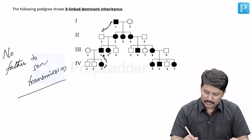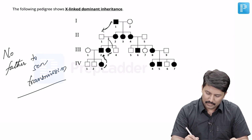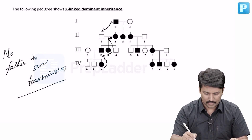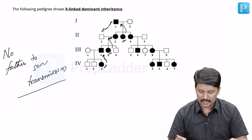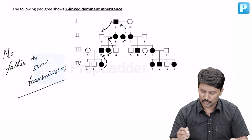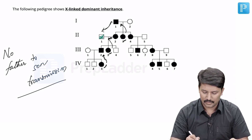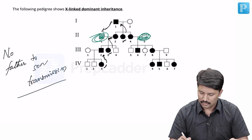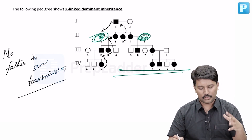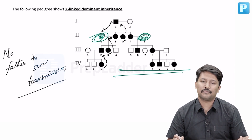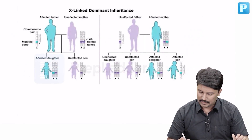Then there is another affected female — look back, the mother has transmitted. Here is another affected female — look back, father has transmitted. But can you notice any situation where the father has transmitted to son? No, anywhere you do not see a father-to-son transmission. That is very typical of X-linked inheritance.